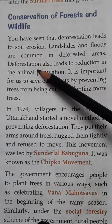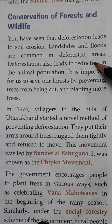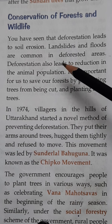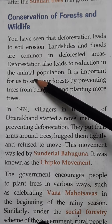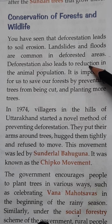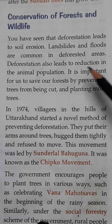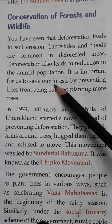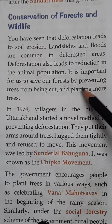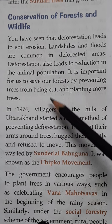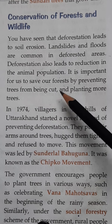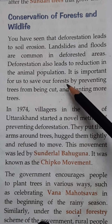Soil is carried away by wind and water from one place to another — this is called soil erosion. It makes the land infertile. Roots of plants hold the soil together and prevent soil erosion.